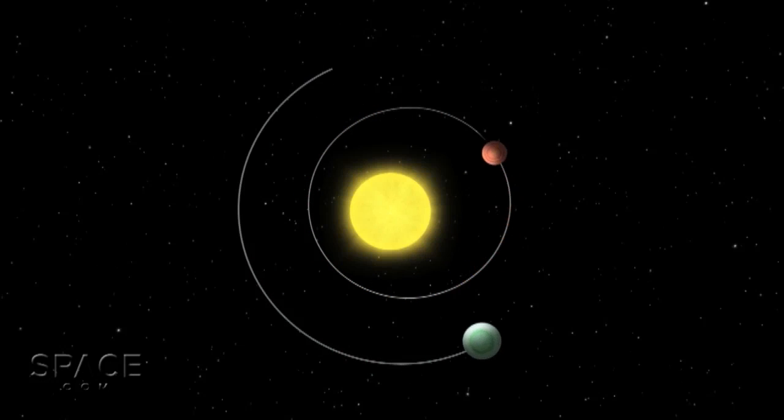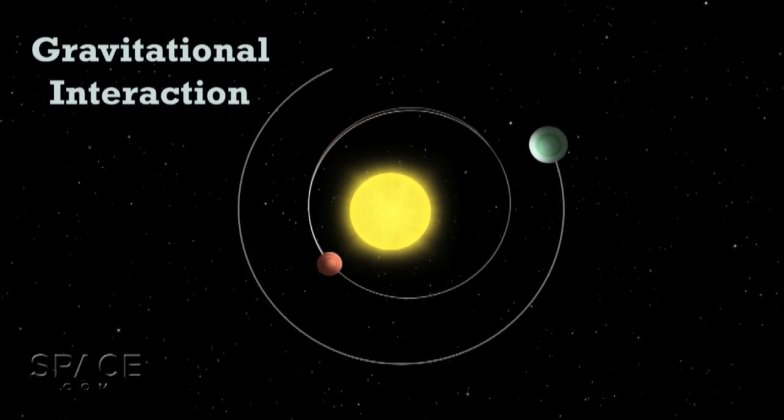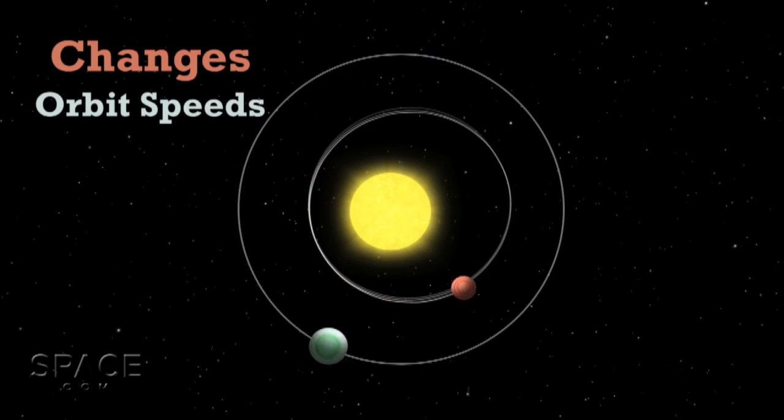When two or more planets orbit the same star, the gravitational interaction between the planets can cause them to speed up and slow down in their orbit.